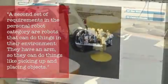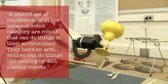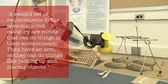The second set of projects in the personal robot category are robots that can do things in the environment. They have an arm so they can do things like picking up and placing objects.